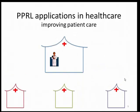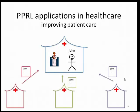A second application of privacy-preserving record linkage in healthcare is improving patient care. Imagine that John goes to a hospital to seek treatment — the providers can issue a query to other hospitals and say, do you have any information on John? This will allow his providers to get a more complete view of John's medical history, provide better care, and also minimize the replication of services. If John has had tests at another hospital, they're able to get that information without having to repeat the test.